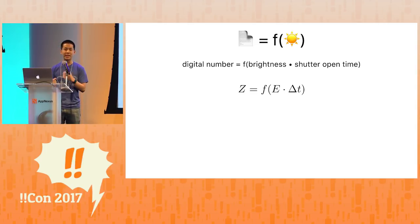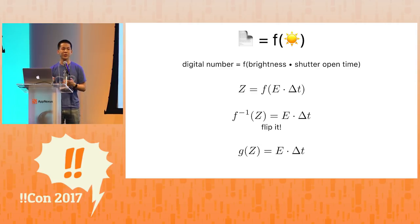It takes in light and gives us a digital number, but in this case we already have our digital files with our digital numbers. So we actually want to go the other way. So I'll invert this function f, then I'll just rename it. So I'll make another function g that is just f inverse. And this function g is the one that we want to recover.